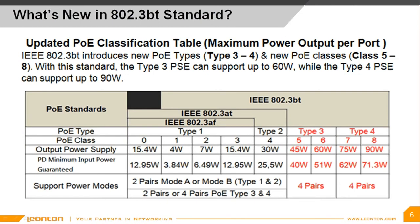Let's look at the first key enhancement. The new standard has introduced Type 3 and Type 4 PSEs and PDs along with additional PoE classes. What it means is that more PoE power can be transferred from a PSE device to a PD device. For example, it can be guaranteed that a PD device can draw as much as 71.3W while a PSE sends 90W.